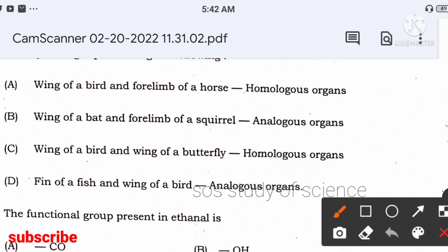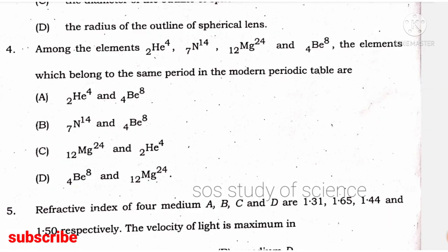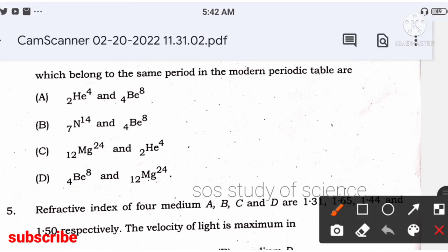Looking at wing of bird and forelimb of horse — both have a similar body structure but their functions are different. Hence they are considered homologous organs. So the right answer — wing of bird and forelimb of horse — is a homologous pair.